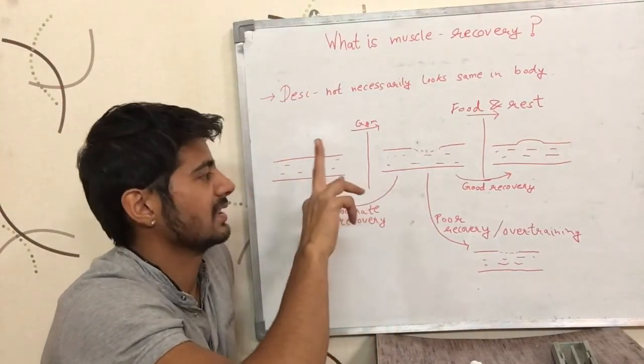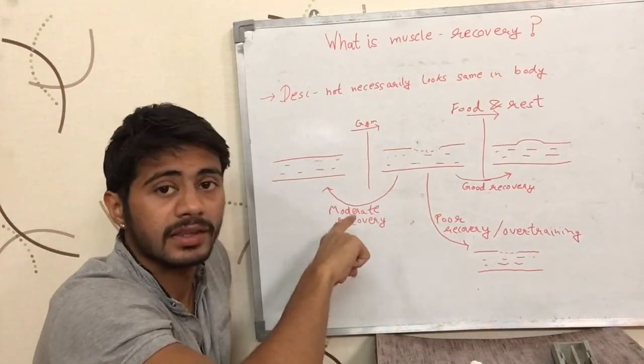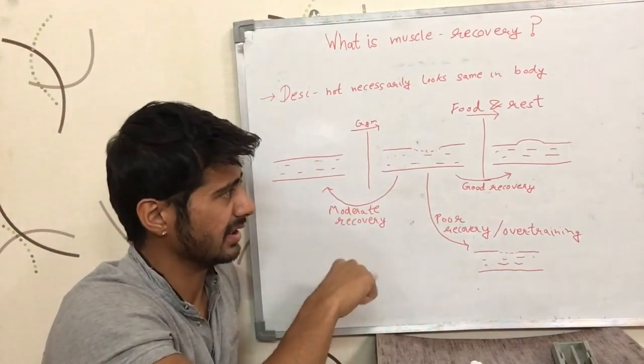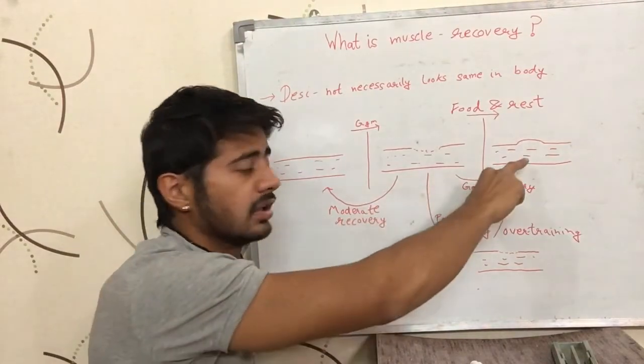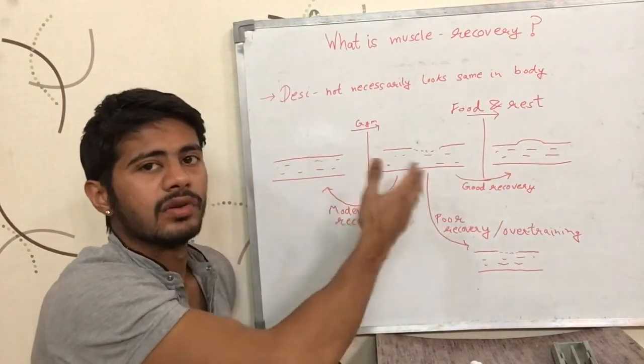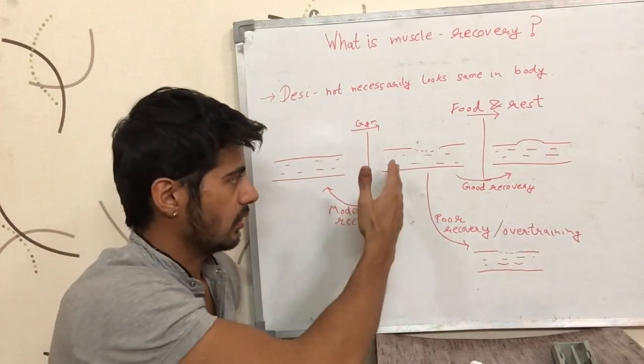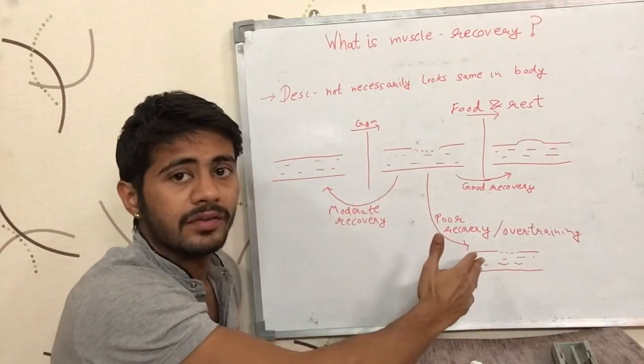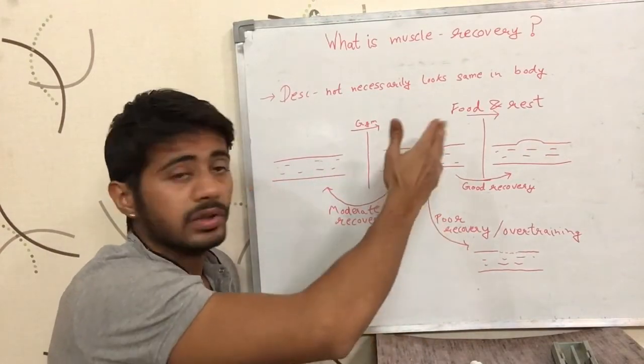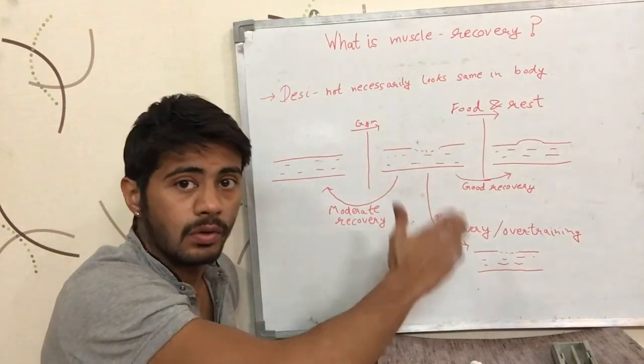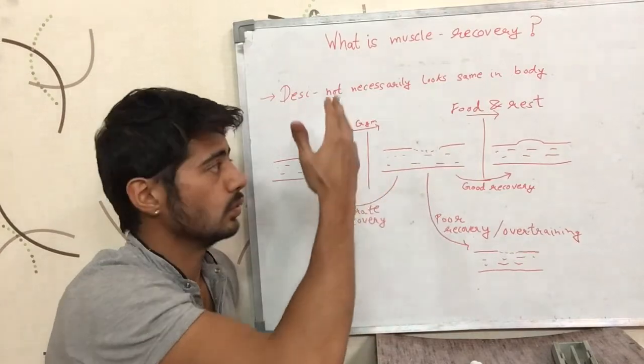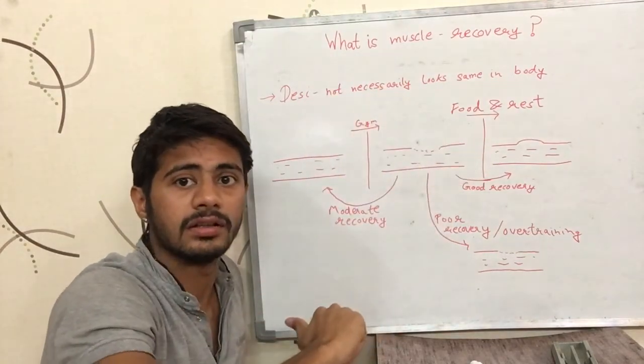So that can also be the case. So basically that is how muscle recovery works. I hope I explained everything in quite decent detail. So you can have a good recovery, you can have a moderate recovery where you come back to where you were, or you can have a poor recovery either because you did not give it the right food or the right rest, or because you overtrained even when you gave it the right food or the right rest.